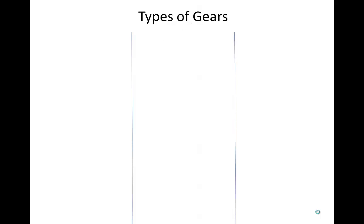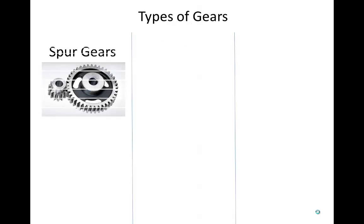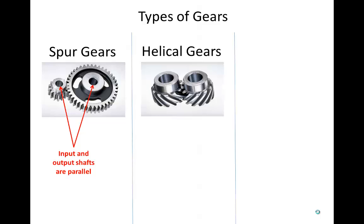Now let's talk about another type of mechanical transmission component: gears. There are several different types of gears in gear systems. Spur gears are probably the most familiar to you — notice that spur gears require that the input and output shafts be parallel to each other. Helical gears are similar to spur gears but result in quieter operation.